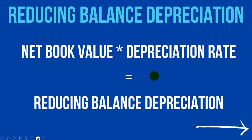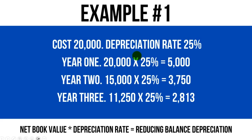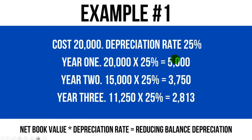Let's look at some examples — it will make more sense the more examples we look at. Example one: an asset costs 20,000 — that could be pounds, dollars, euros, or any currency. The depreciation rate is 25%. The calculation is net book value times the depreciation rate equals reducing balance depreciation. In year one, there's no accumulated depreciation yet, so net book value is 20,000. 20,000 times 25% equals 5,000 depreciation for year one.